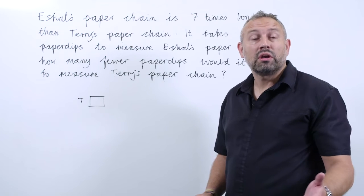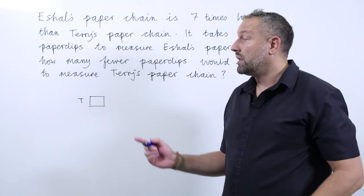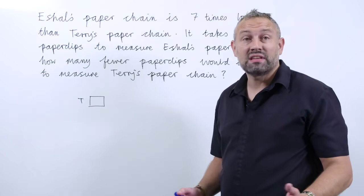So there's Terry's paper chain - we're going to consider that as one part. And Eichel's paper chain is seven times larger, so that'll be seven parts.